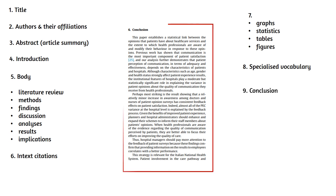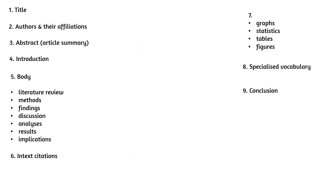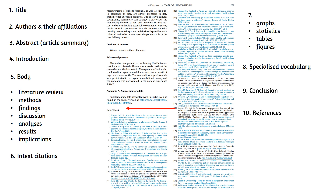Finally, at the end, there will be a conclusion where the authors make a final statement and recommendations from the study. This will be followed by the reference list. A scholarly journal article will always have a list of references from the in-text citations available at the end of the article. This can be useful to see what other research you could explore related to the topic.